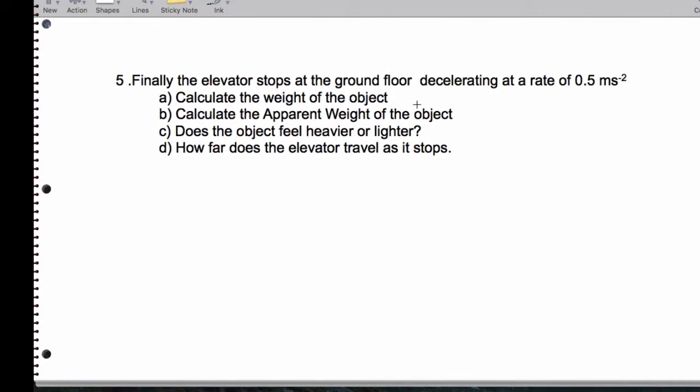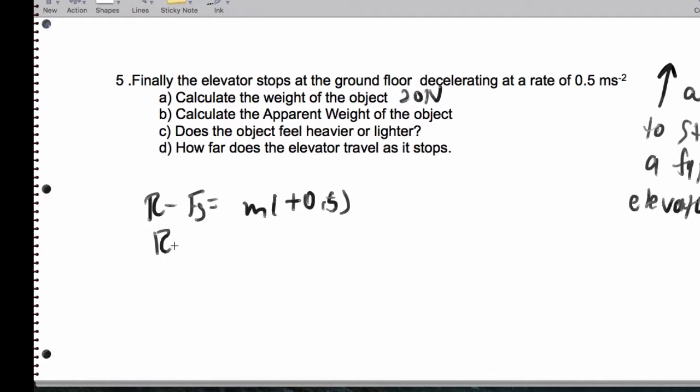Finally, for number 5, we're going to stop. Now, in order to stop, we need an upward acceleration to stop a falling elevator. So the weight is still 20 newtons. The apparent weight, so R minus FG equals M times plus 0.5. That's R minus 20 equals 1. R is 21 newtons. We do feel heavier.